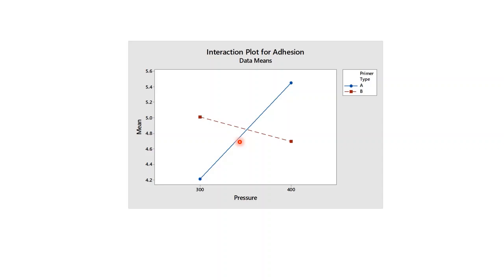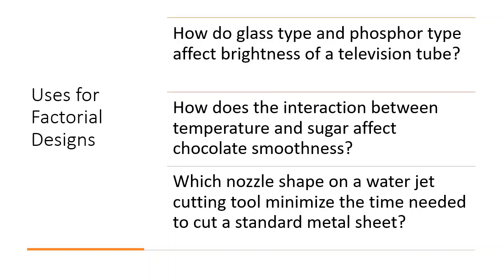An investigation of all combinations of factors and levels would reveal that primer B with lower spray pressure results in better adhesion than primer A at high pressure. We use factorial designs to answer important questions about our factors. Which factors most strongly influence the response? Do interactions between two or more factors influence the response?